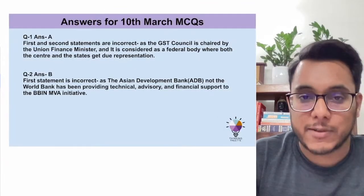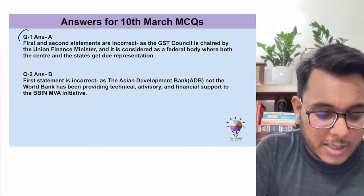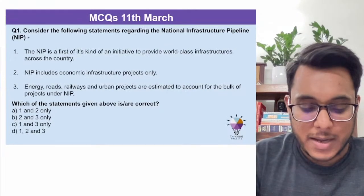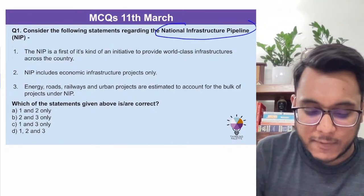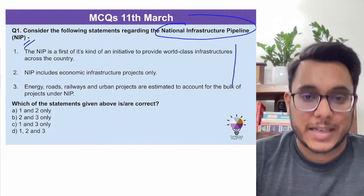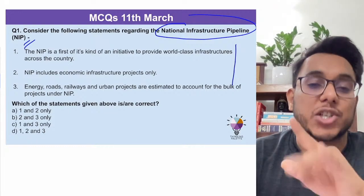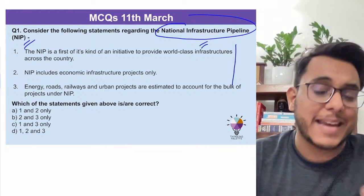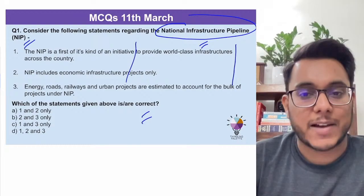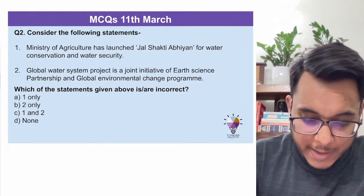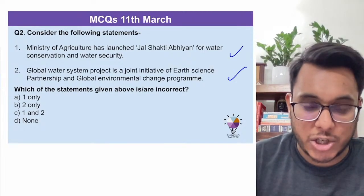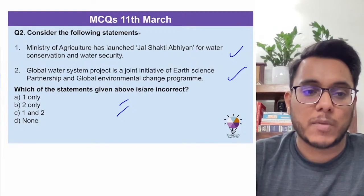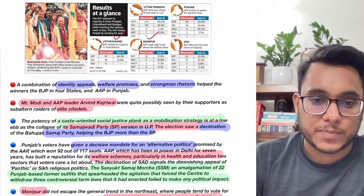Yesterday's MCQ answers: Question 1 — correct answer is A; Question 2 — correct answer is B. You can pause the video to read the explanation. Today's MCQ 1 is from the National Infrastructure Pipeline (NIP), relevant because recently an agency was created for the National Monetization Pipeline. MCQ 2 is about initiatives of the Ministry of Agriculture and water initiatives. Please pause and read; you can also download the PDF from our Telegram channel.